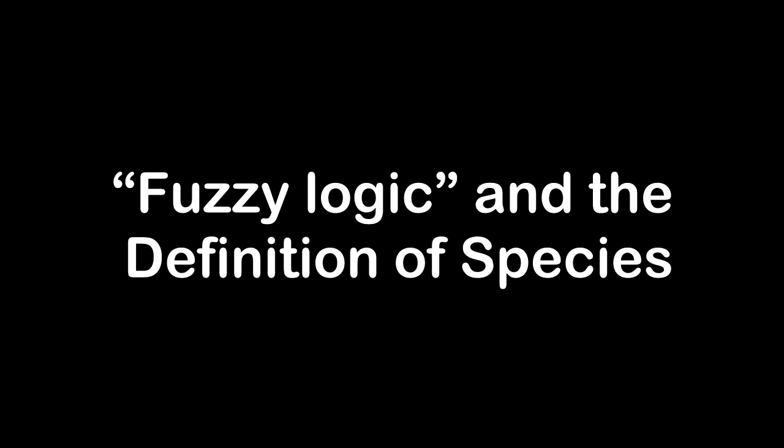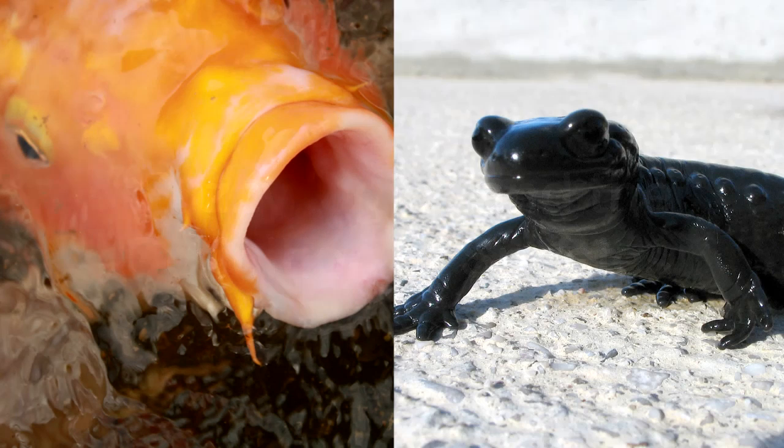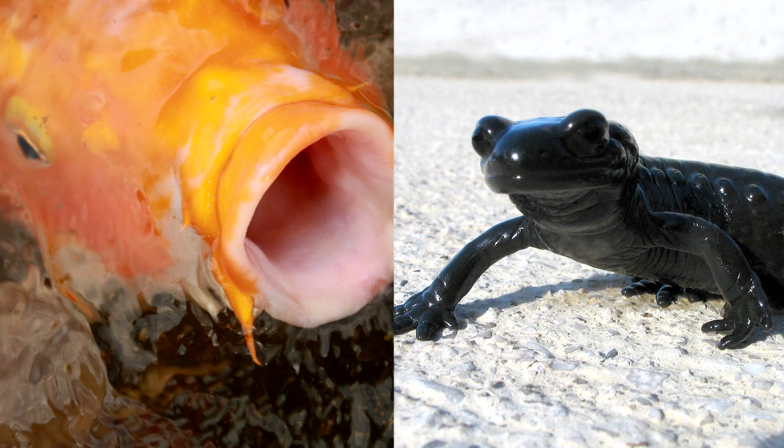Creationists always ask how one species turns into another. It's a good question, but it's hard to answer them because they seem to have a messed up idea of how it works. Let's say you have fish and tetrapods. The creationist wants to know how one turns into another.